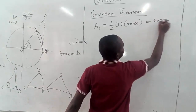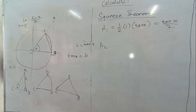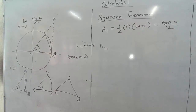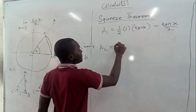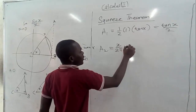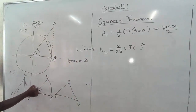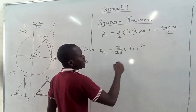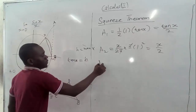Simplifying gives us tan x over 2. For the second area — the sector — we use the angle formula: x over 2π times the area of the circle, which is π r squared. Since the radius r equals 1, the π cancels and r squared is 1, giving us the area of the sector as x over 2.